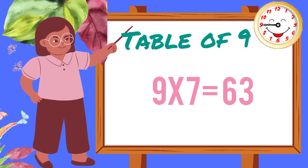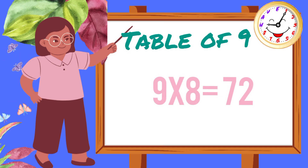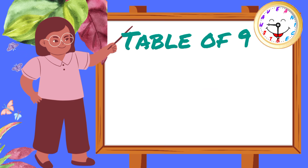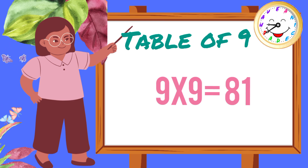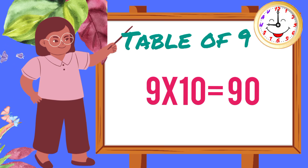Nine sevens are sixty-three. Nine eights are seventy-two. Nine nines are eighty-one. Nine tens are ninety.